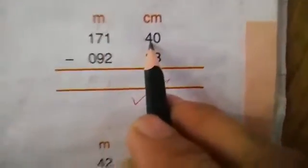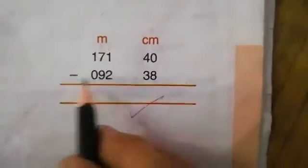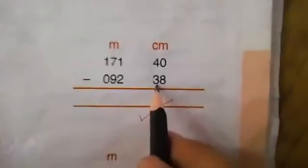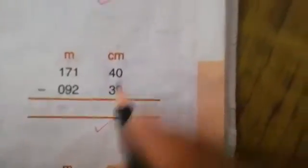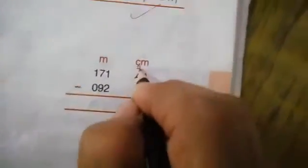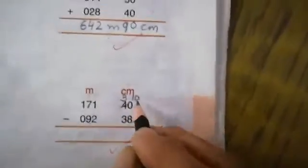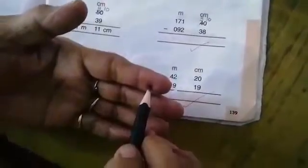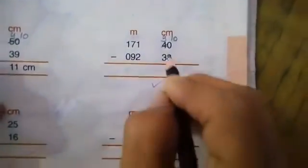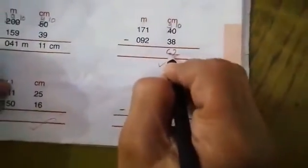171 meter and 40 centimeter minus 92 meter and 38 centimeter. 0 minus 8: we can't do that, so borrow — here will be 10. 10 minus 8: count 1 through 10, then count 8, left is 2. 3 minus 3 is 0.